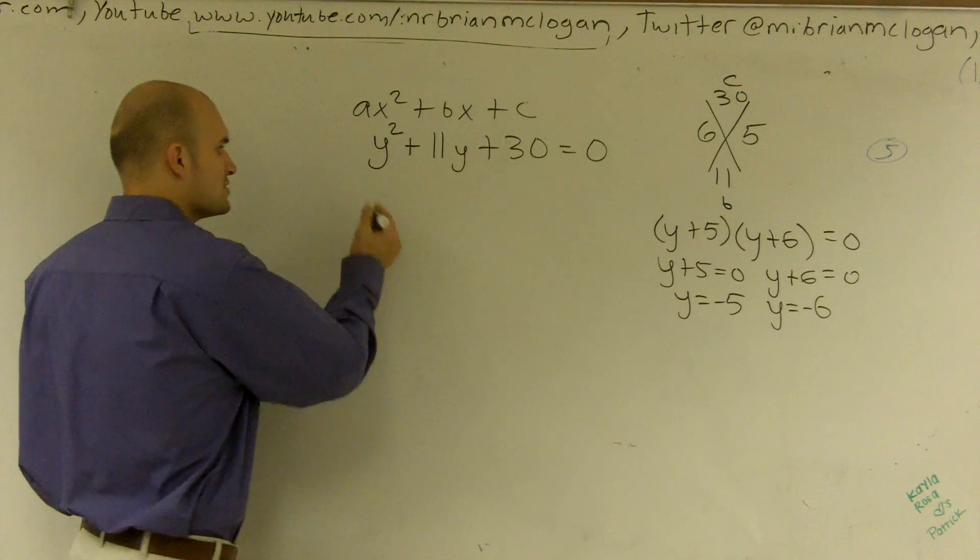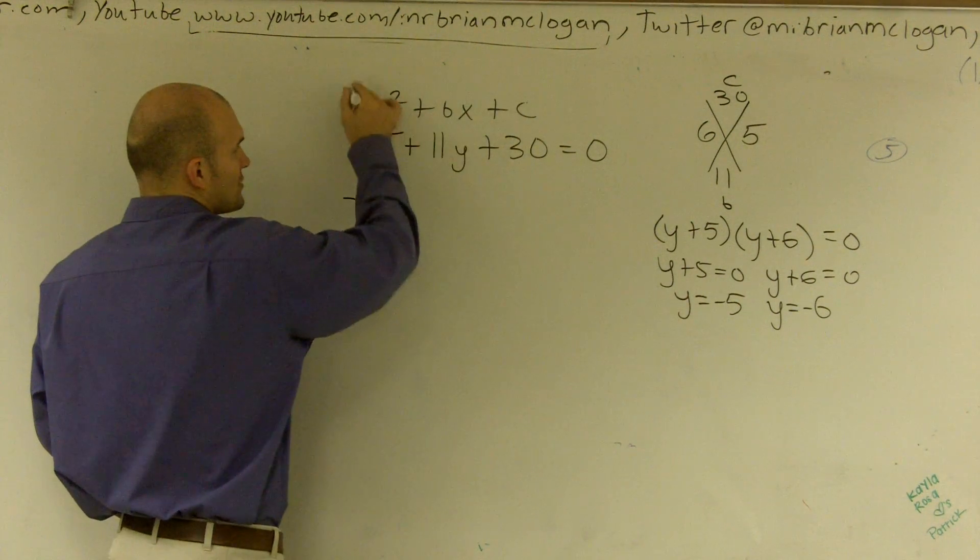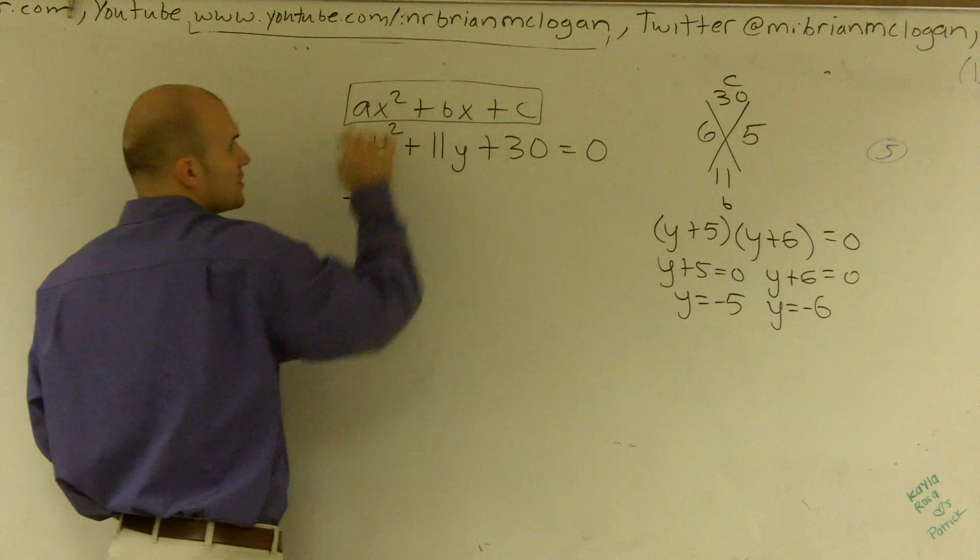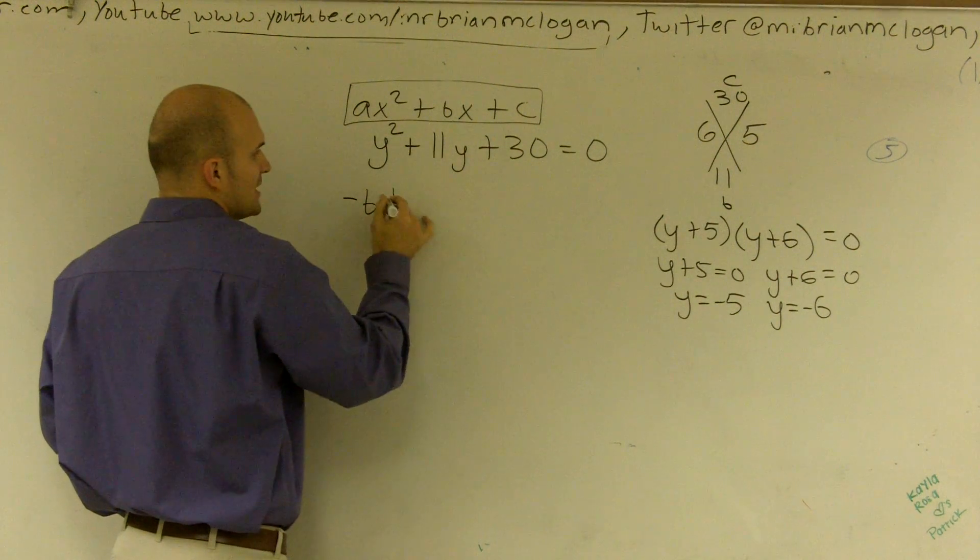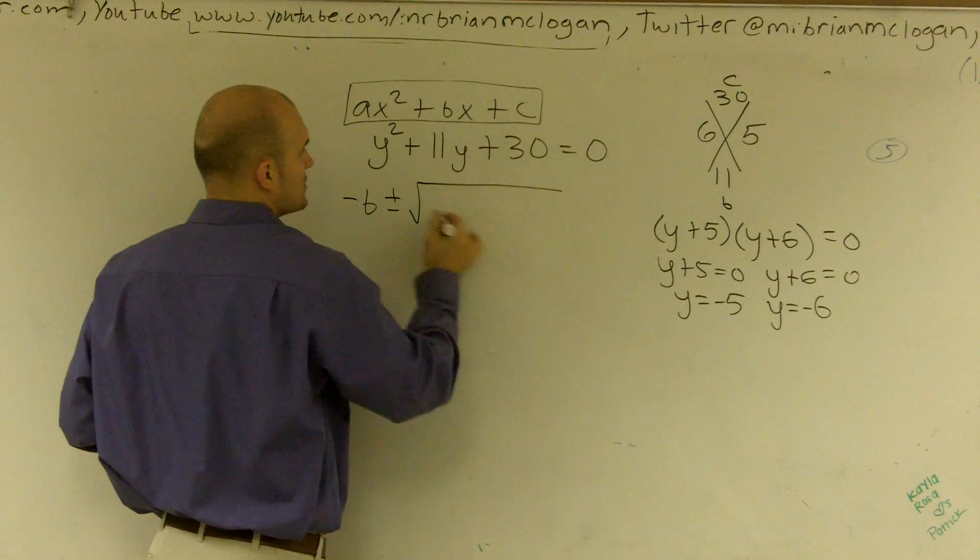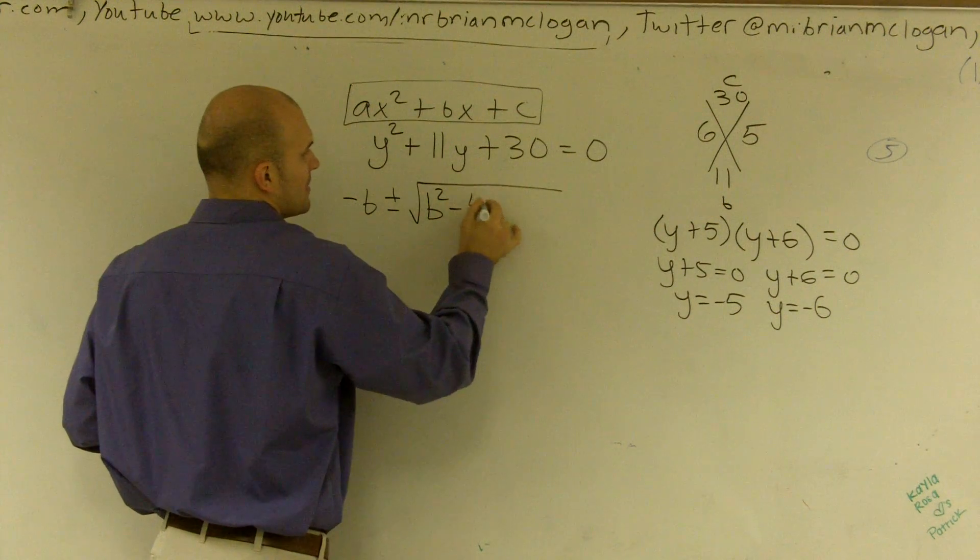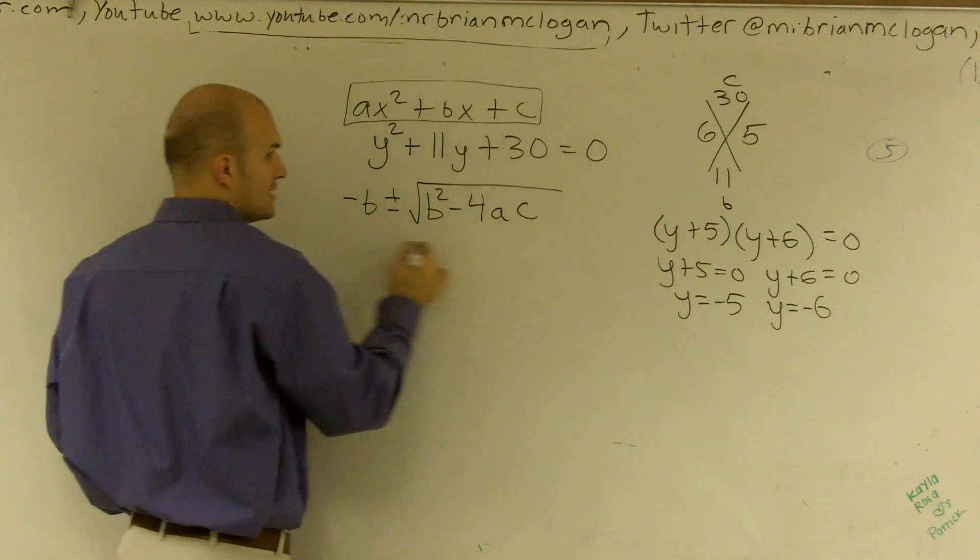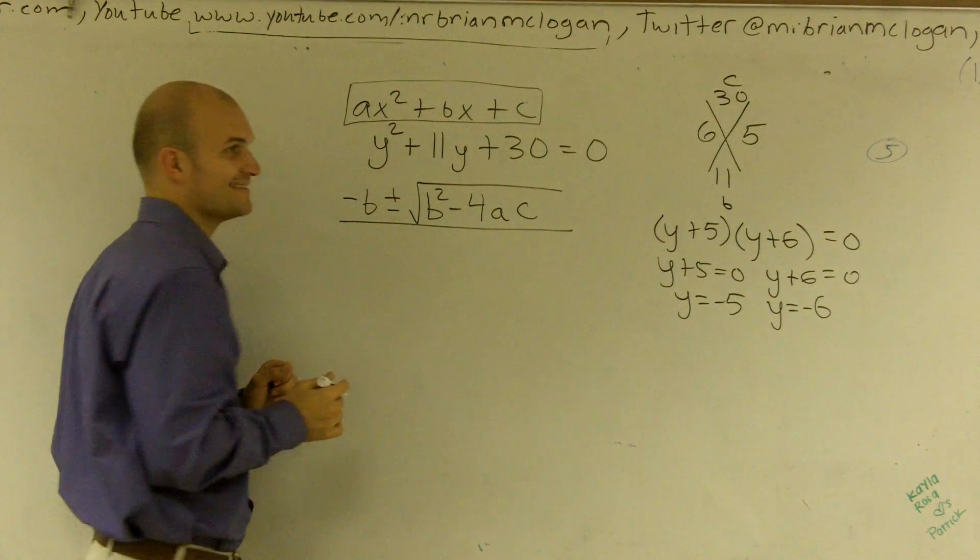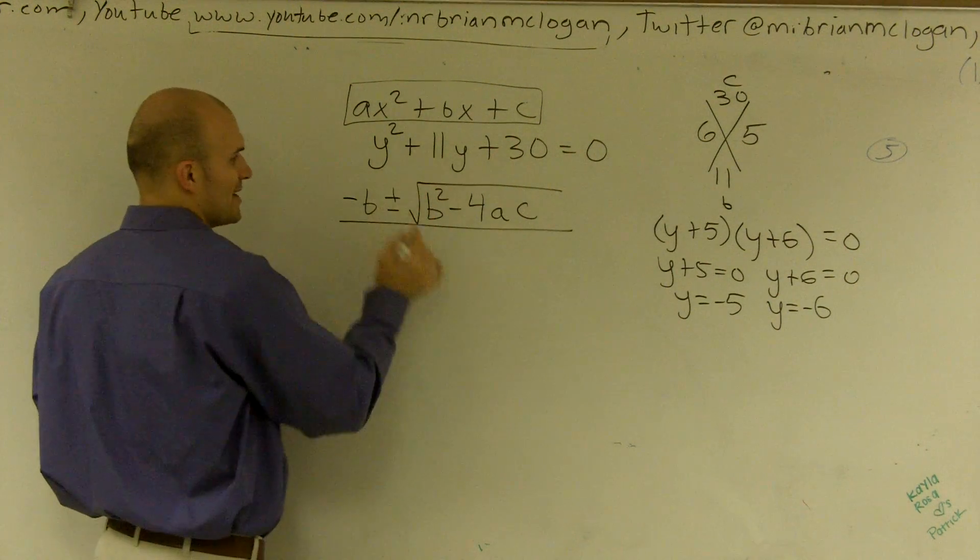So let's do the quadratic formula, which states when it's in quadratic form, which is this form, which we do have, you have opposite of b, plus or minus the square root of b squared, minus 4 times a times c, all over 2a.